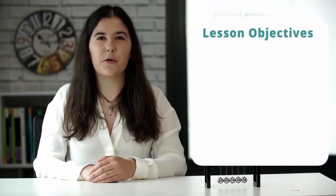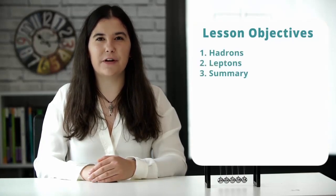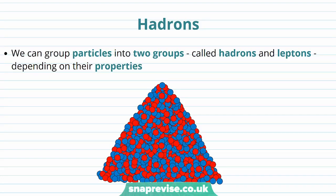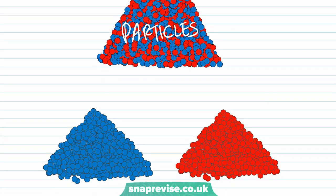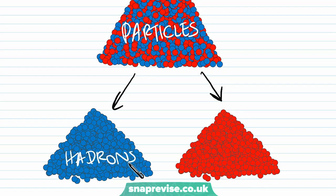Hi guys, in this video we're going to be looking at hadrons and leptons, and we're going to finish off with a summary. First of all we're going to talk about a group of particles called hadrons. We can group particles into two groups, called hadrons and leptons, depending on their properties.